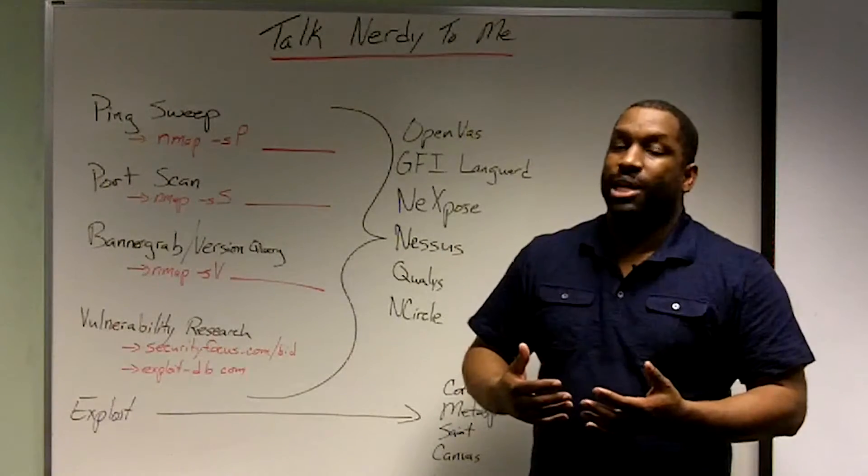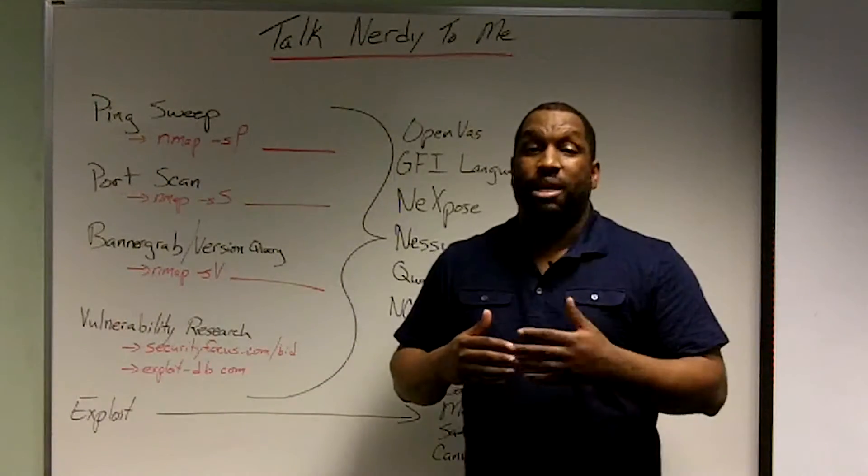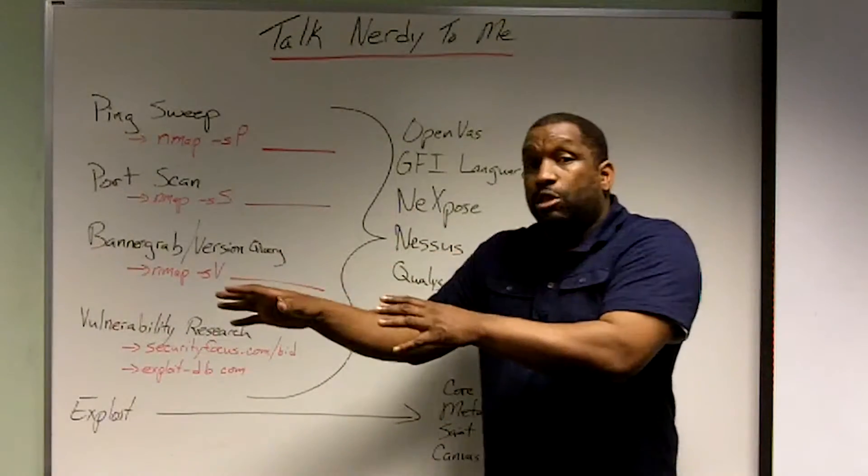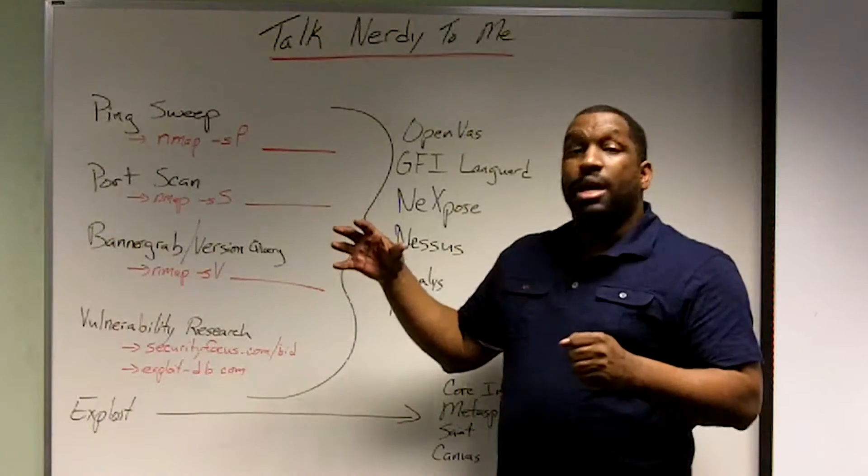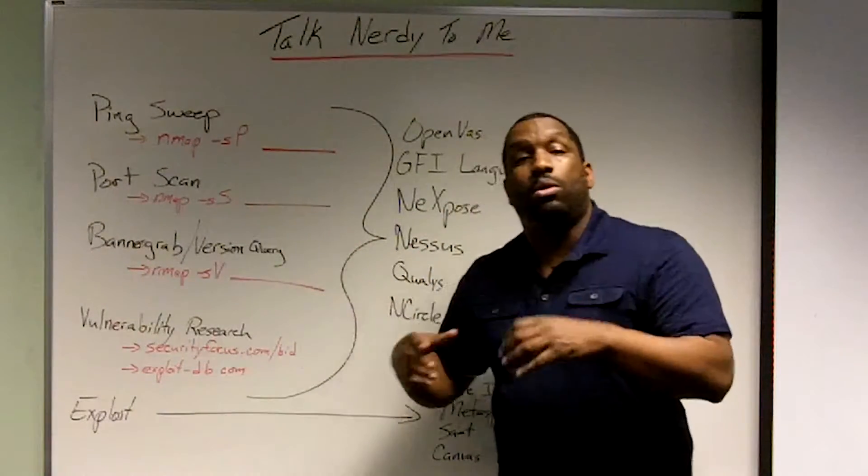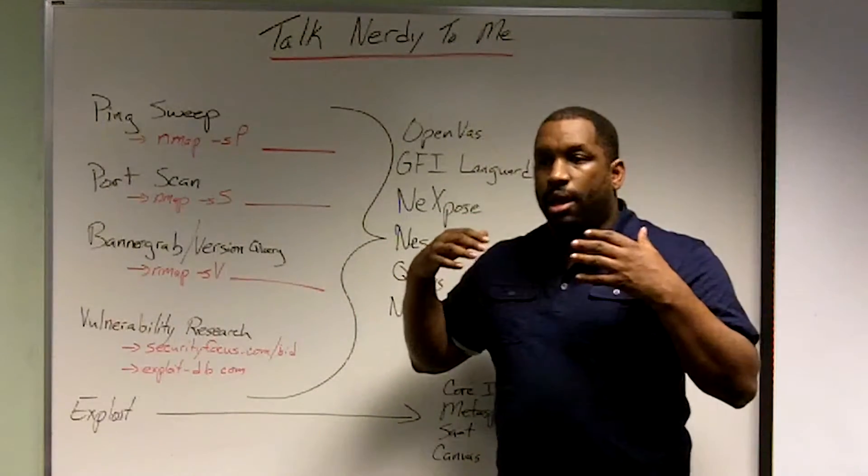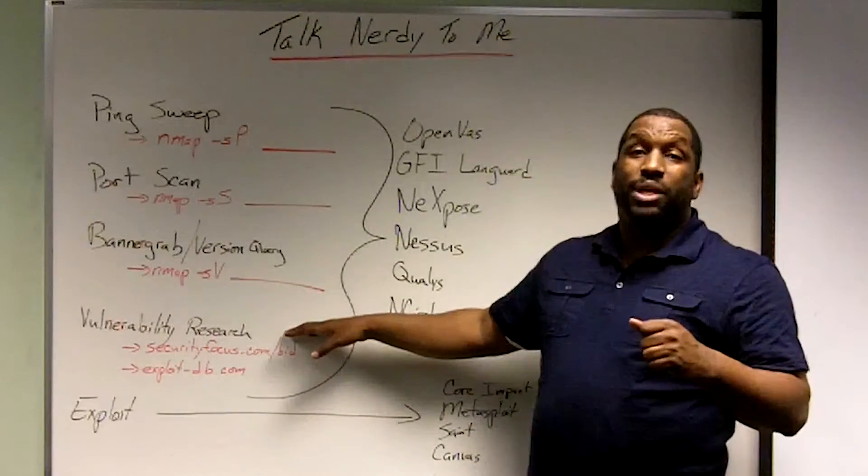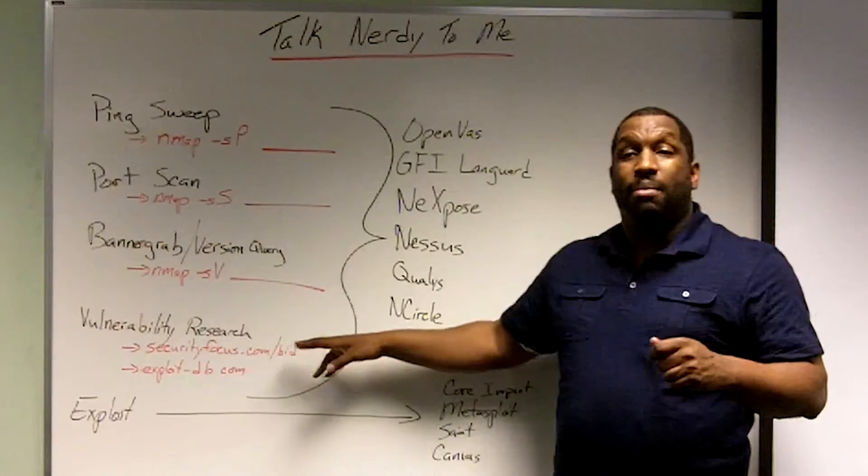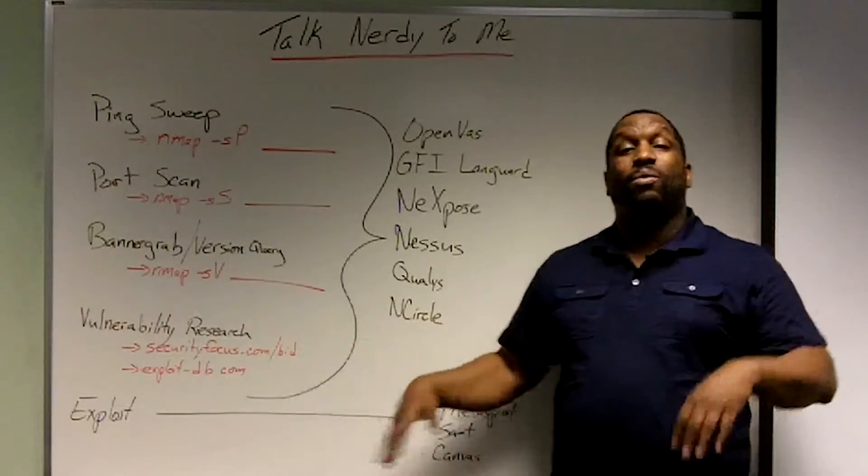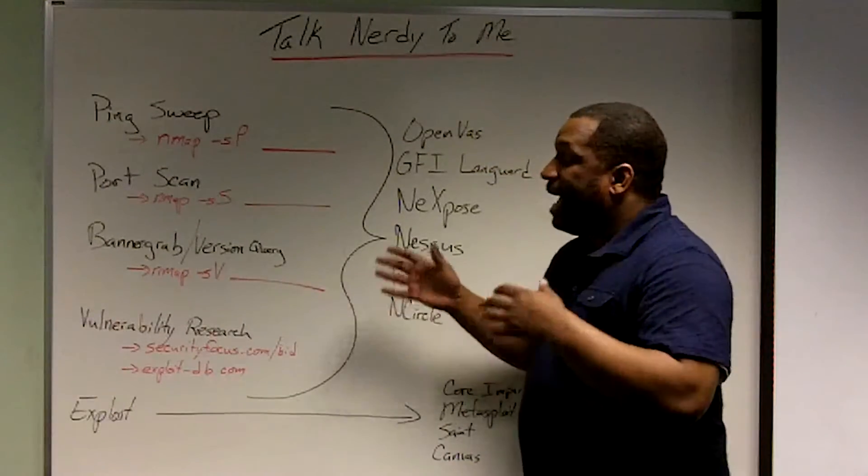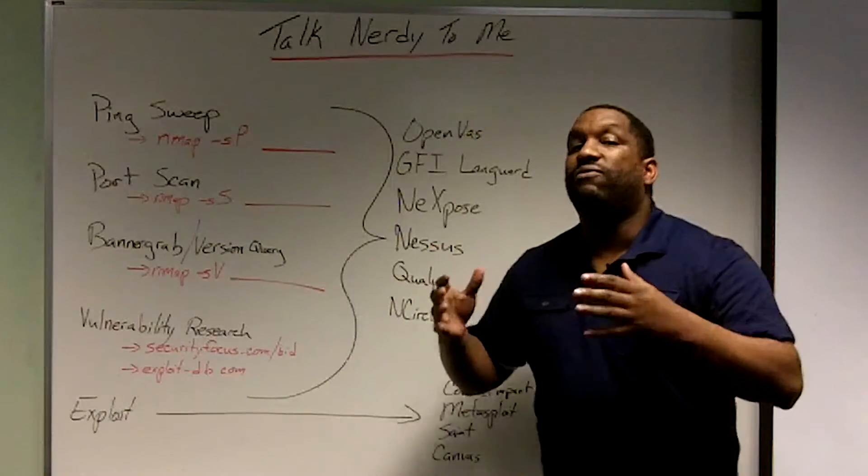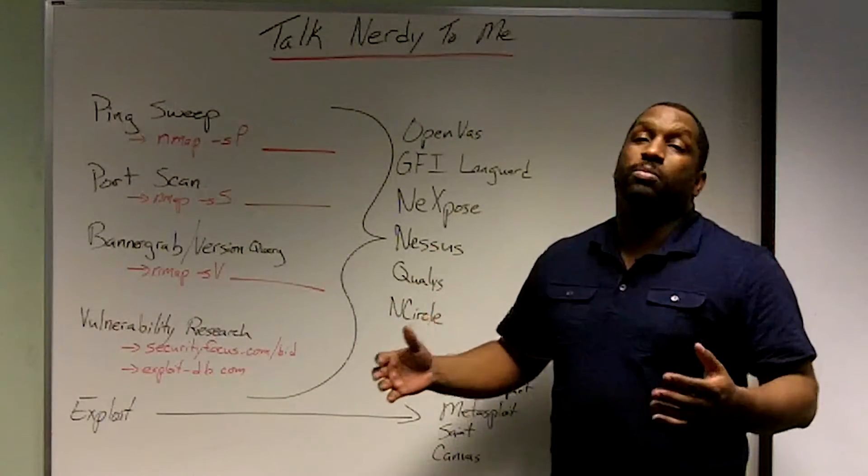Now we need to know what type of FTP server it is. Is it ProFTP, ServU FTP? What is it and what version is it? That's when you're going to do a banner grab or version query where you connect to the port. If I connect to port 21, the FTP server, and it says I'm ServU FTP 4.2, now you go look up, is there a vulnerability for ServU FTP version 4.2? And if there is, is there corresponding exploit code for it?